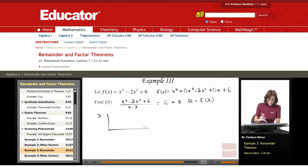So this is going to give me a coefficient of 1, coefficient of 0, negative 2, 0, and 6. Bring down the 1.